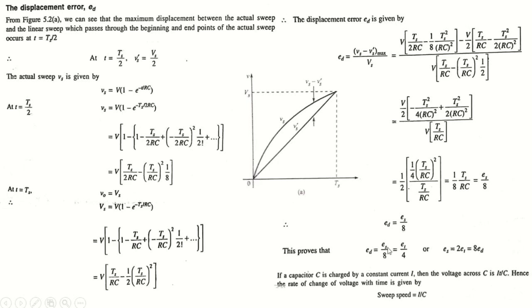Since TS/RC equals the sweep speed error es, this can be expressed as es/8. Therefore, the displacement error ed = es/8 = et/4. This also implies that the sweep speed error es = 2et = 8ed, confirming the relationships between all three linearity error parameters for the exponential sweep circuit.